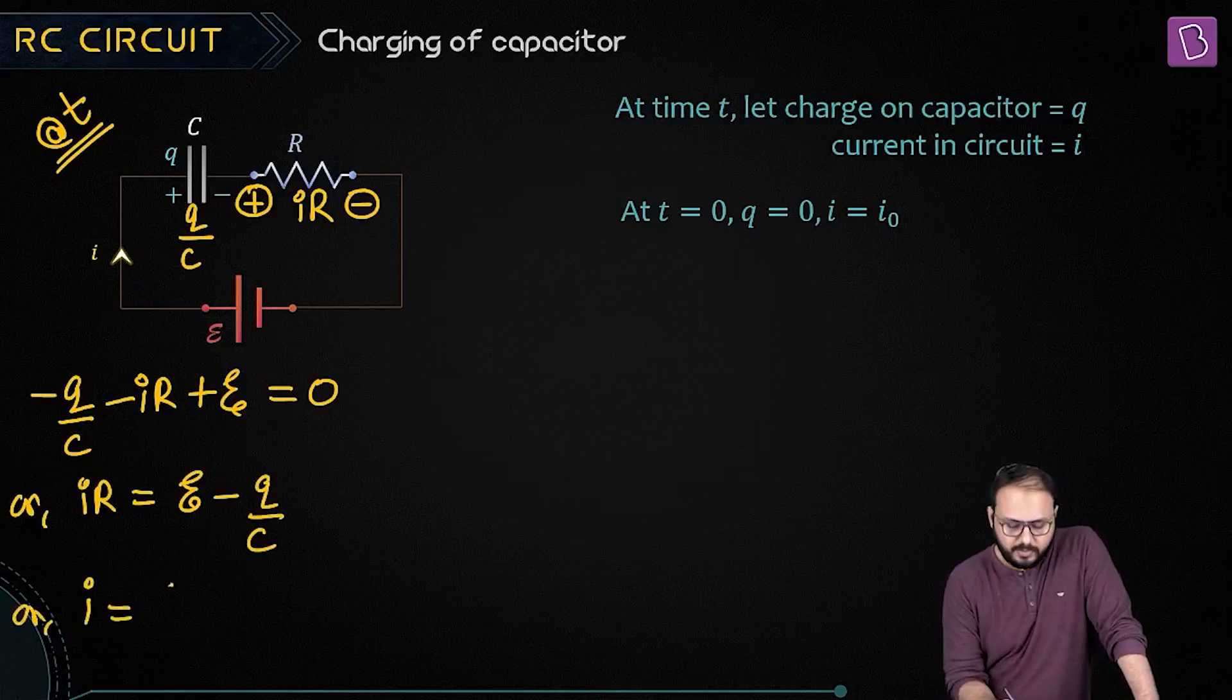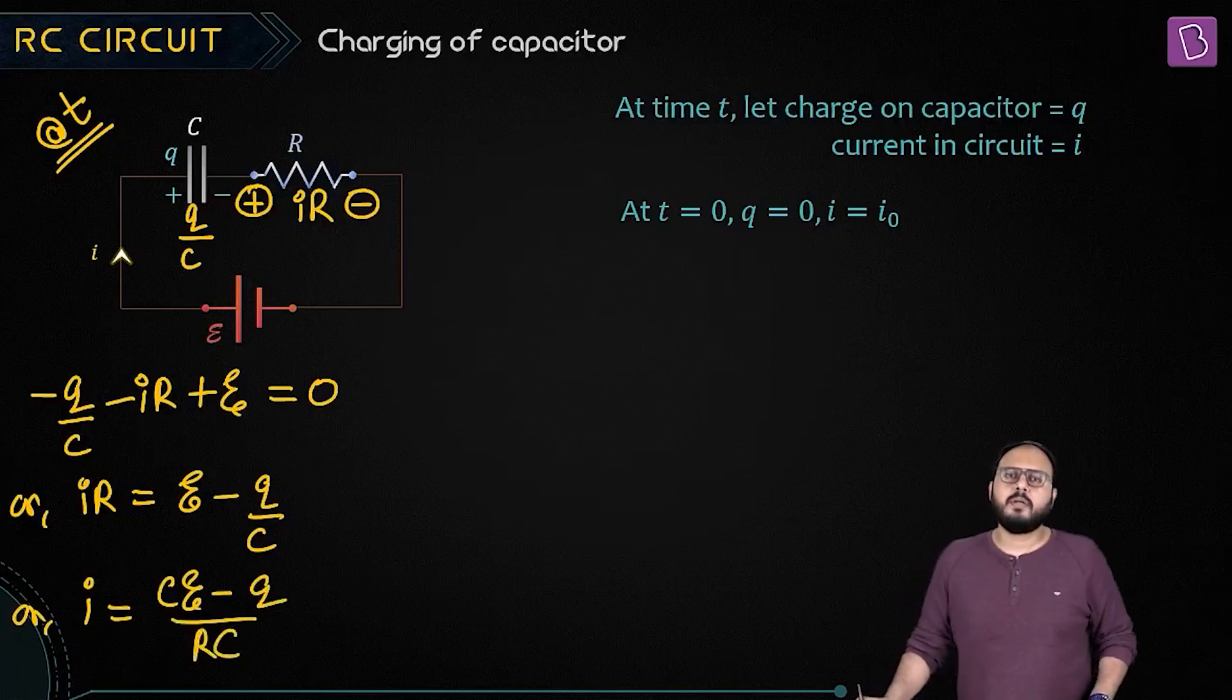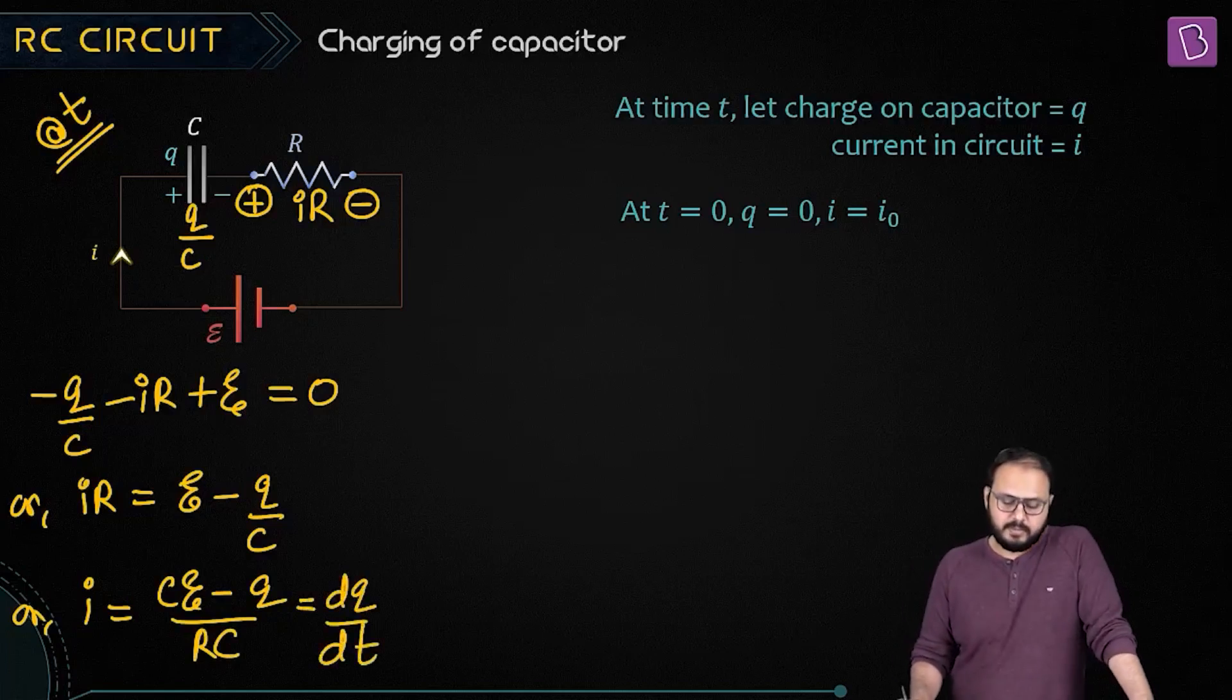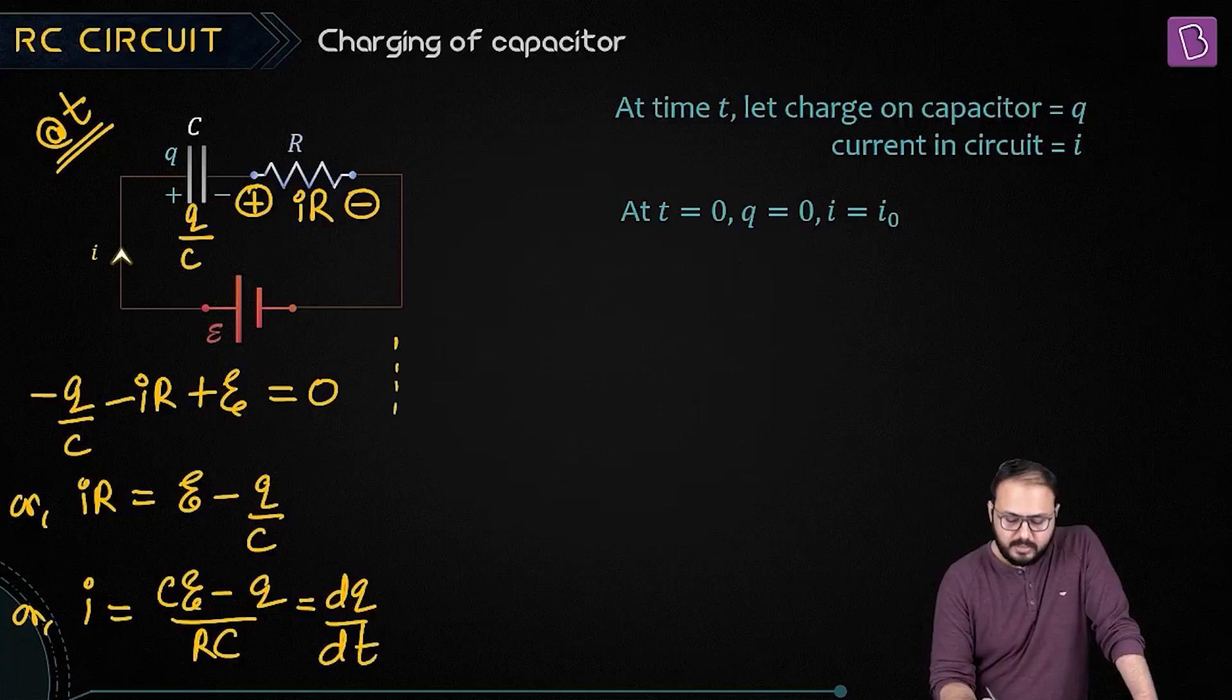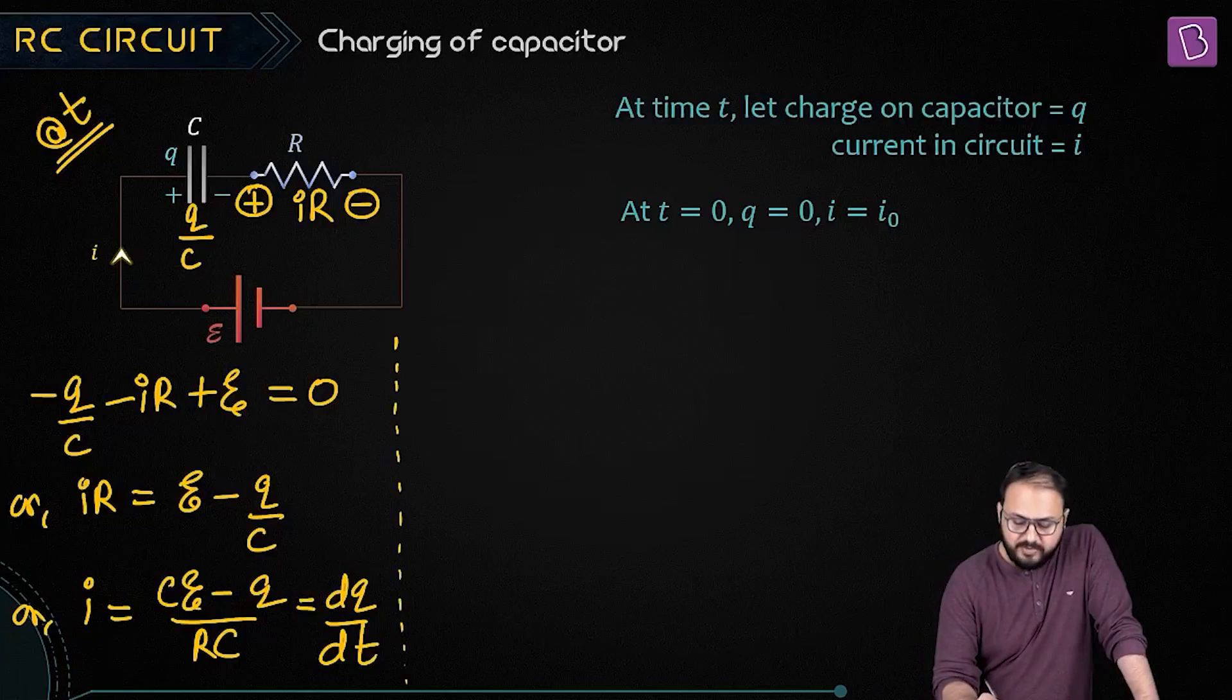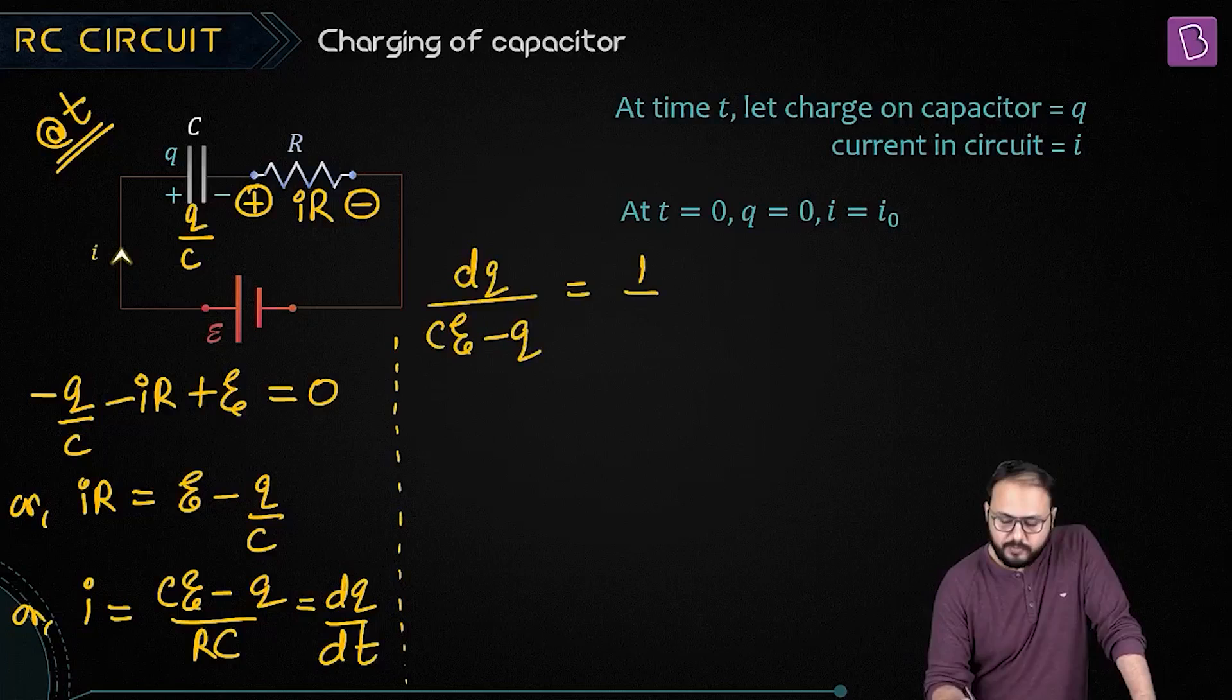Are you okay with writing i as dq by dt? The rate at which the capacitor is getting charged, absolutely. So by variable separable: dq upon (ce minus q) is equal to 1 upon rc dt. Variable separable.